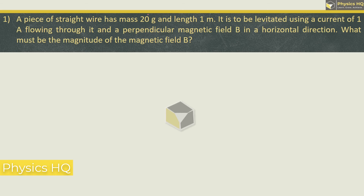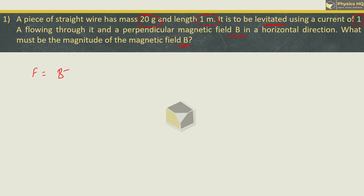A piece of straight wire has mass 20 grams and length 1 meter. It is to be levitated using a current of 1 ampere flowing through it and a perpendicular magnetic field B in a horizontal direction. What must be the magnitude of the magnetic field B?